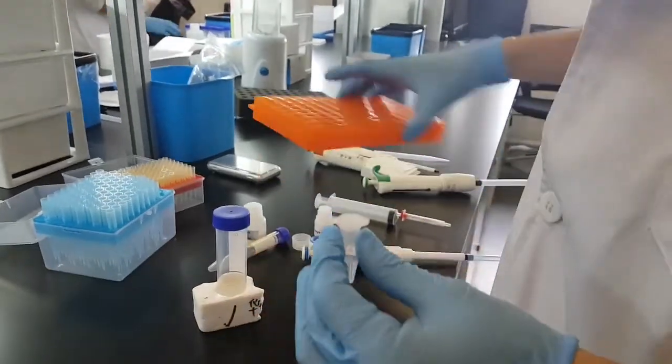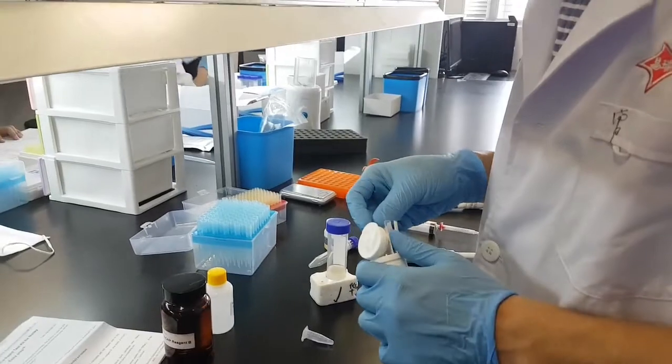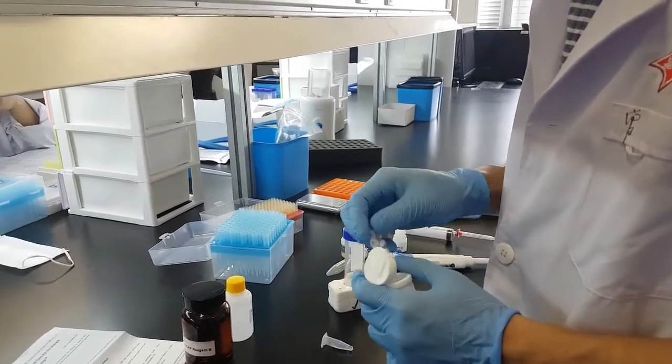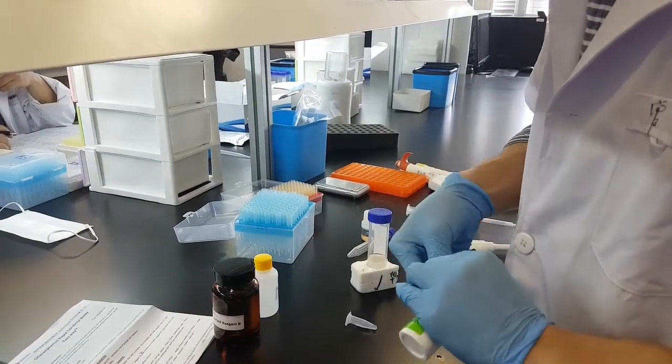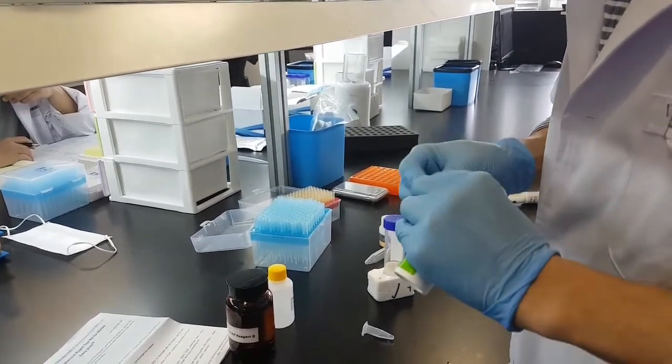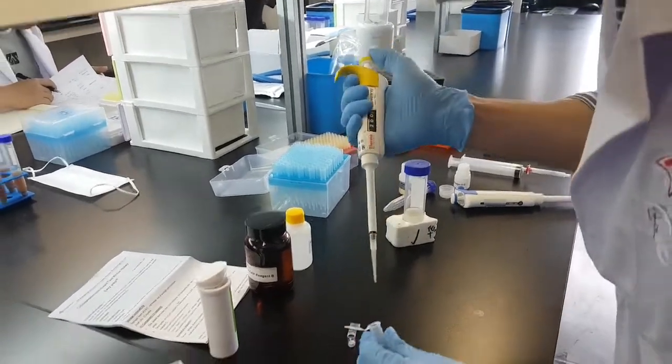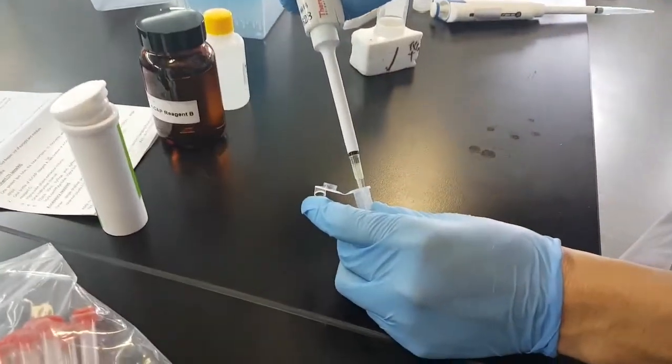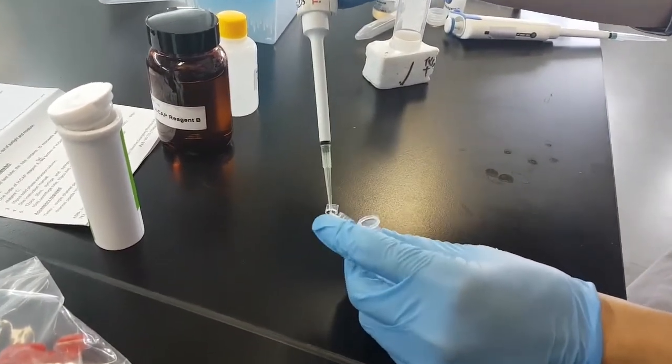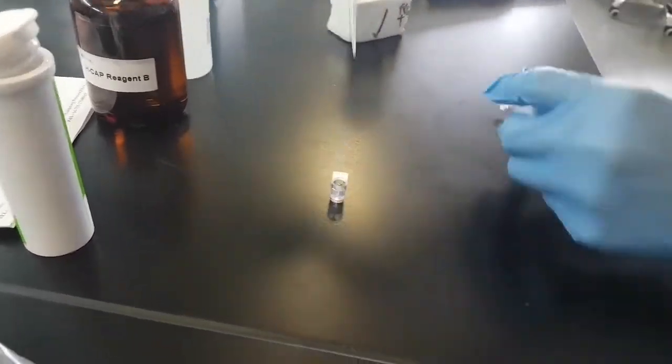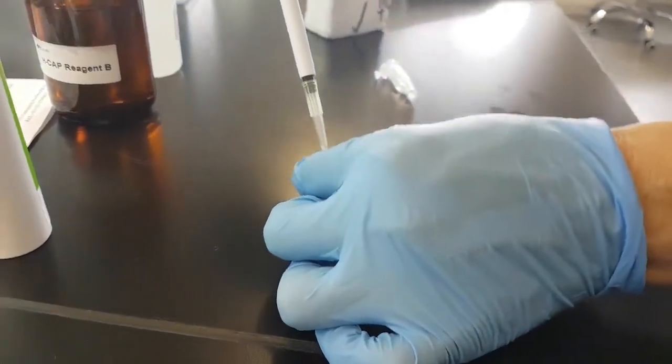Close the centrifuge tube. Next step will be the testing itself. We'll take the number of red microwells and test strips we need. We'll take 200 microliters of the liquid from the two milliliter centrifuge tube and put it into the red microwell. Now we'll mix it well.